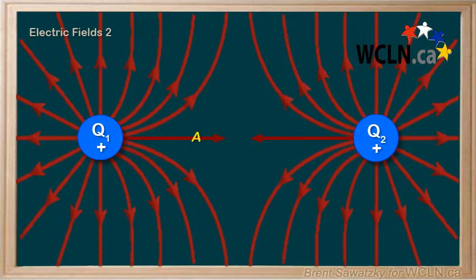Thus our electric field EA equals E1, the field resulting from Q1's charge, plus E2, the field resulting from Q2's charge. And with vector addition we can see that EA is going to be to the right.